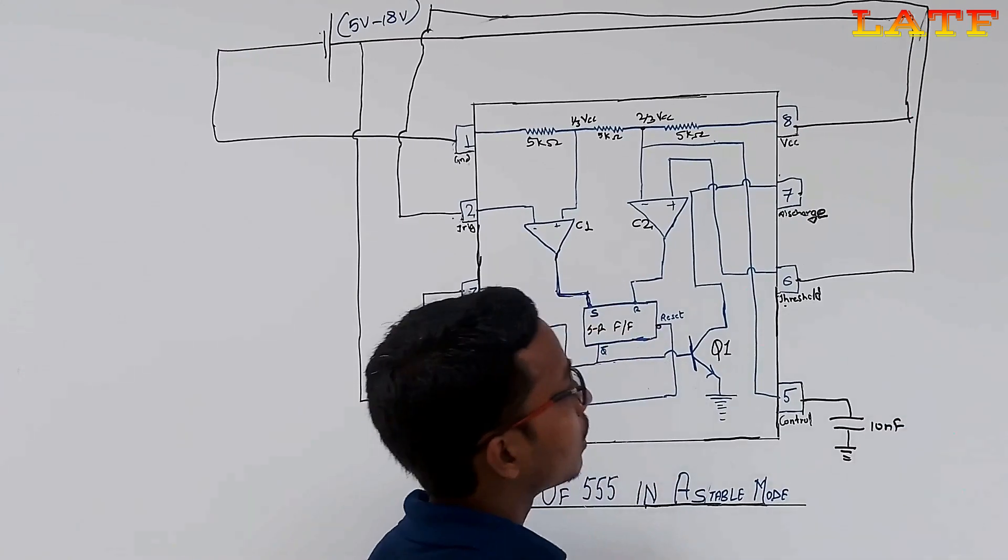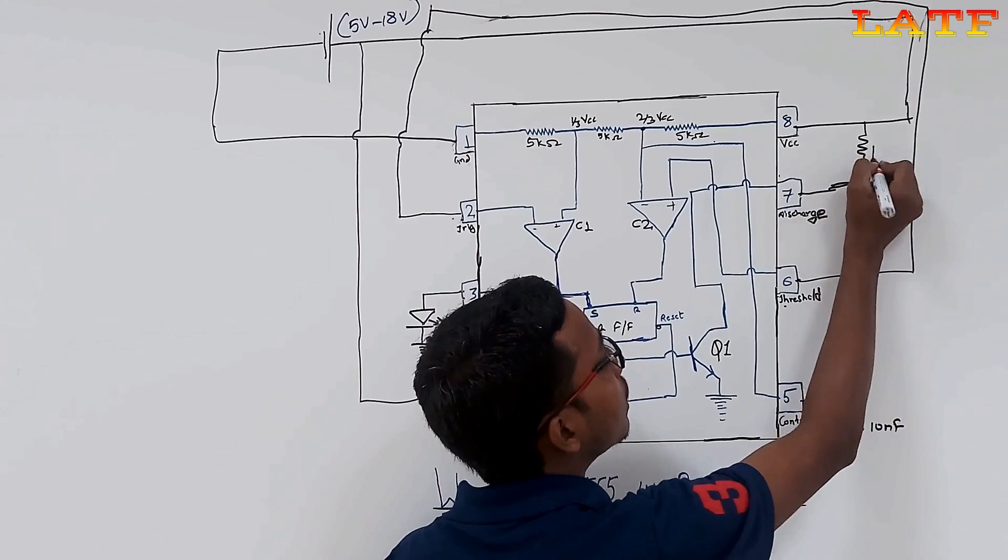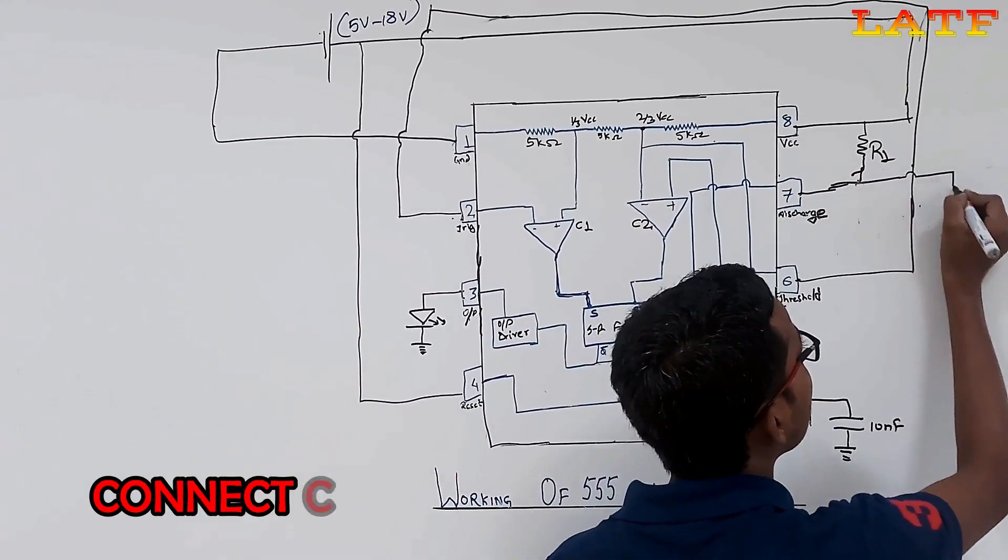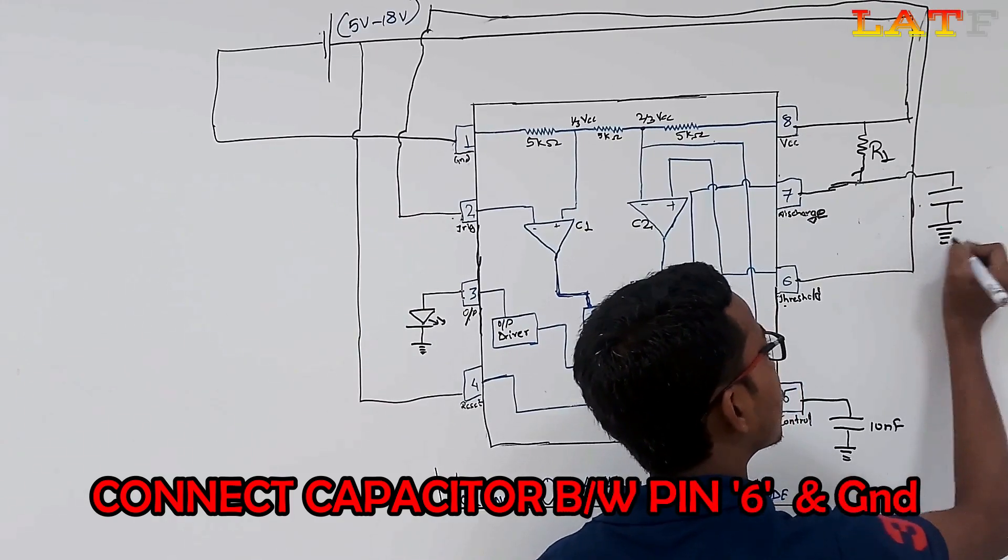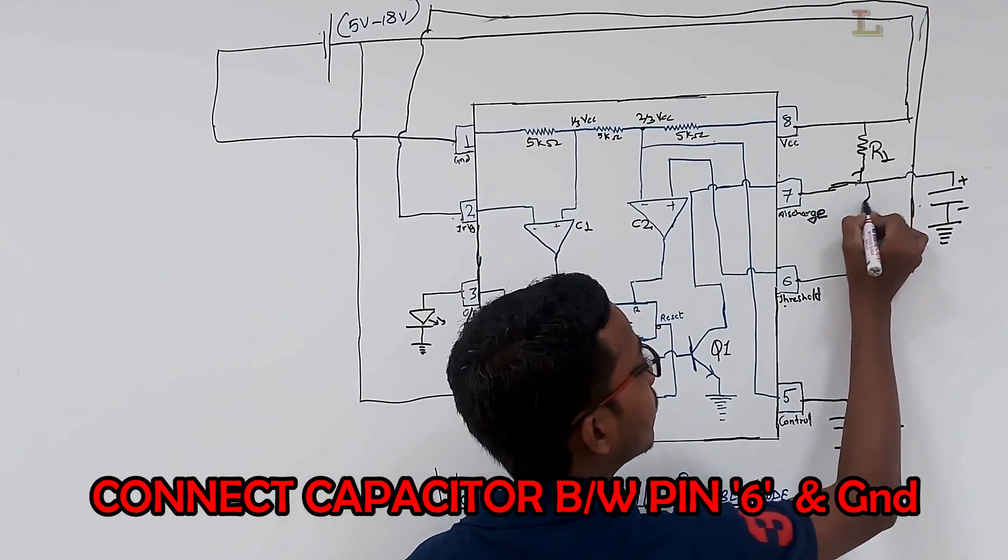Connect a resistance between pin number 7 and 8, and let it be R1. Now, connect the capacitor between pin number 6 and ground. In the figure by mistake, it is connected between pin number 7 and ground. And, let it be C1.